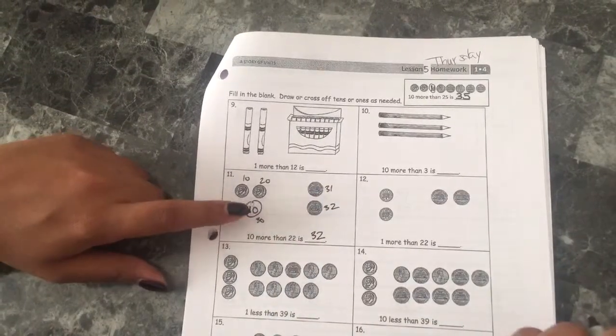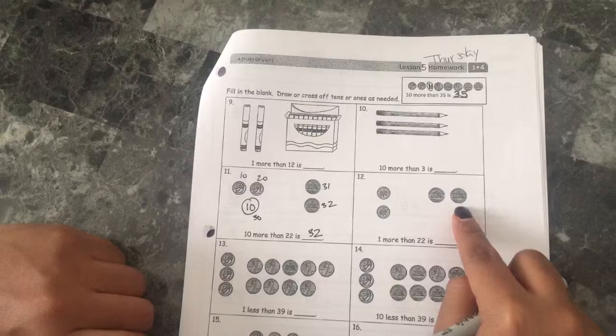So to draw a dime you're just gonna put the number ten inside of a circle. Let's go on to this one.